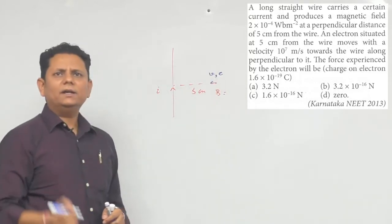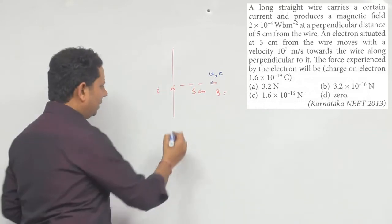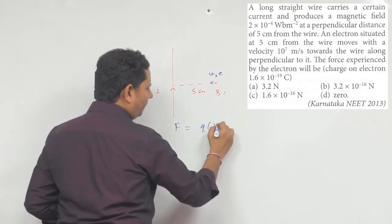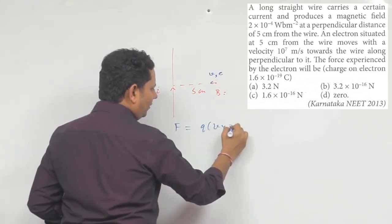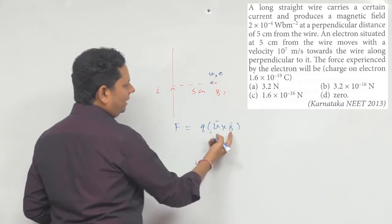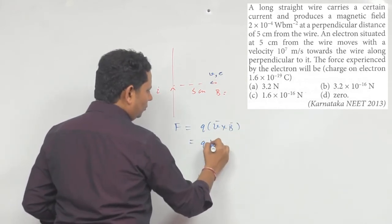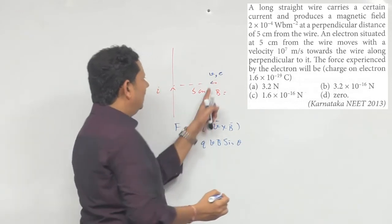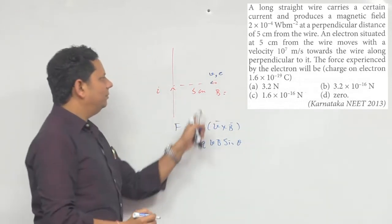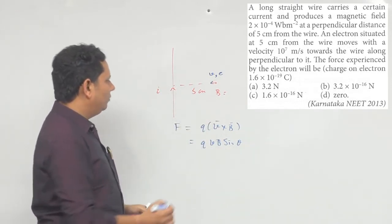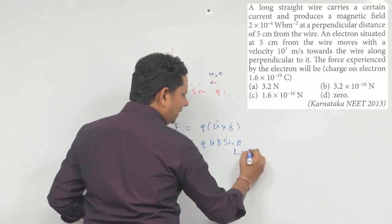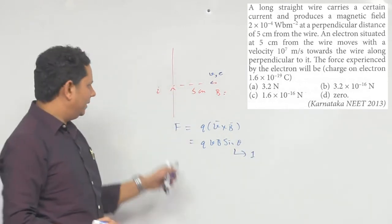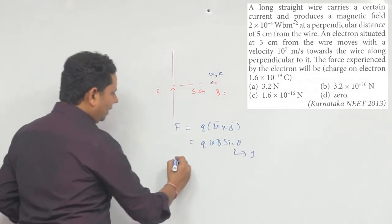Its velocity is v. We need to find the force. As we know, force is written as F = q(v cross B). In this case, we can also write it as F = qvB sinθ. In this case, the angle between B and the velocity is 90 degrees, so sinθ becomes 1 since θ is 90 degrees.